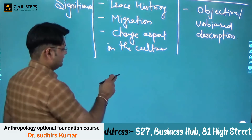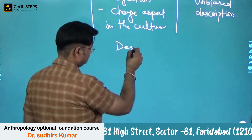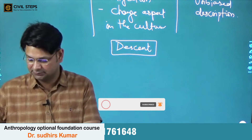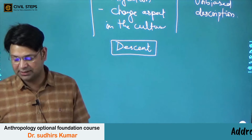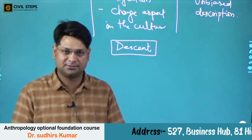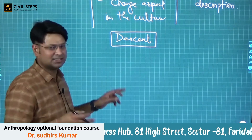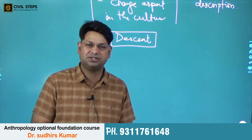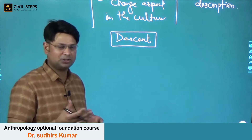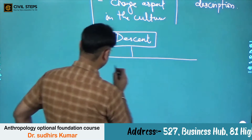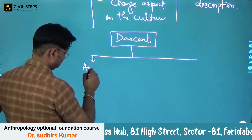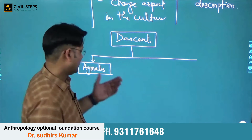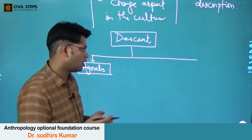What is descent? Descent is a method of classifying individuals in terms of their kinship relationships. There are many terms that often confuse students of civil services examinations. Two such terms are agnates and cognates — descent can be of two types: agnetic descent and cognetic descent.